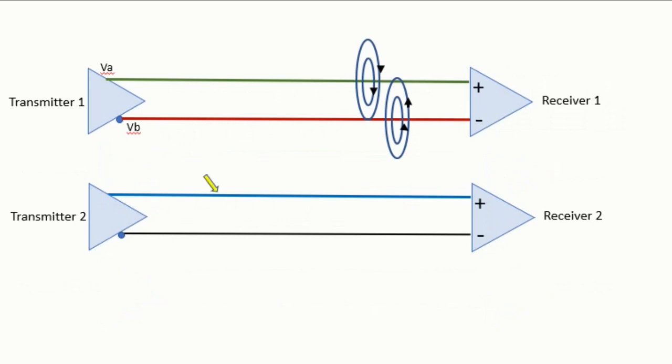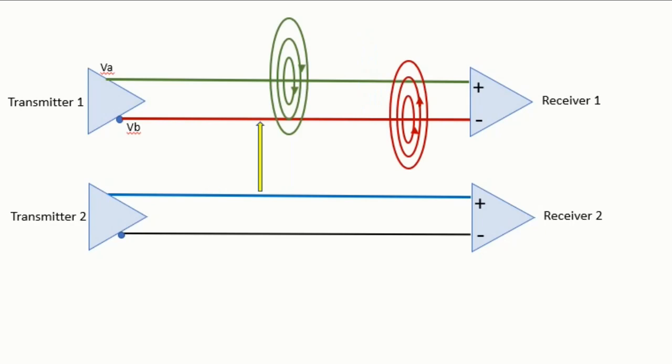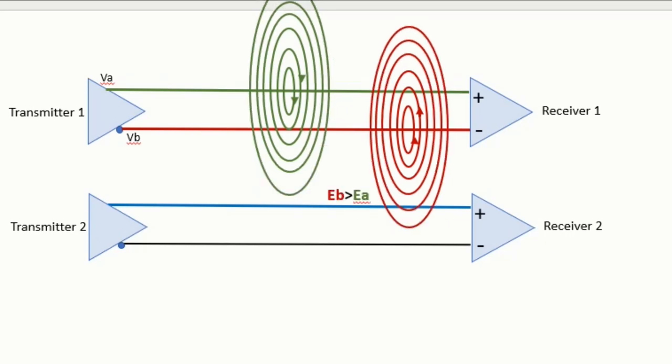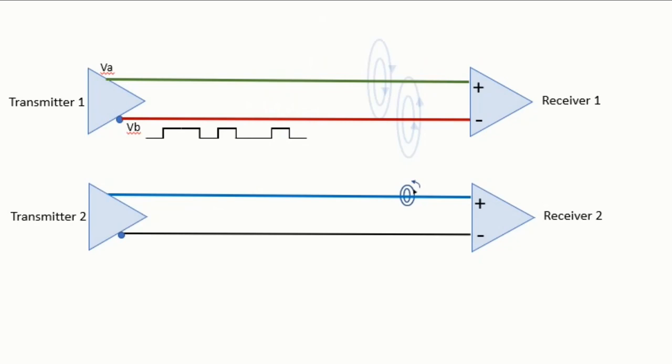As you see here, the first wire from transmitter two, the blue wire, is much closer to the second wire of transmitter one than the first wire. And because of the blue wire proximity to the red wire, then along the blue wire the electromagnetic field emanated from the red wire, I call it here Eb, will be slightly stronger than the magnetic field from the green wire Ea. So they don't completely cancel along the blue wire.